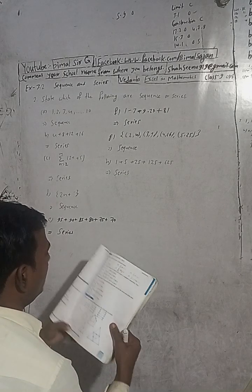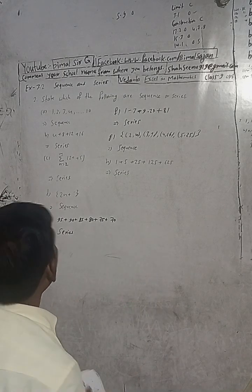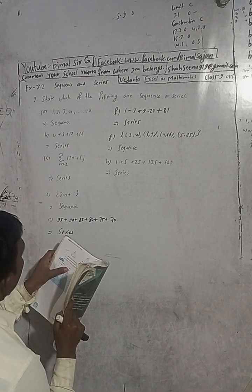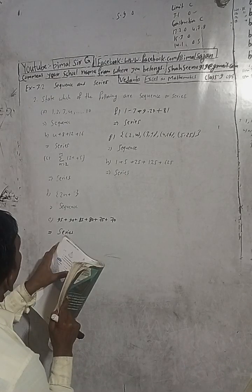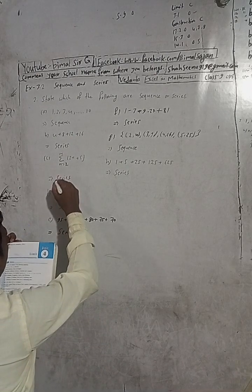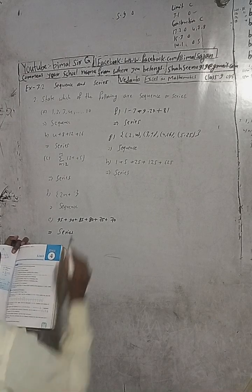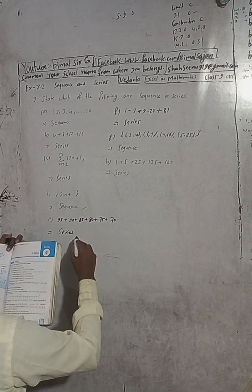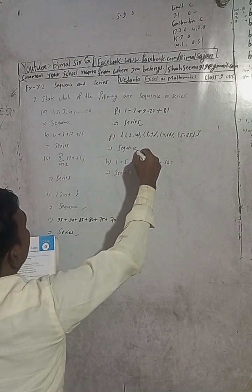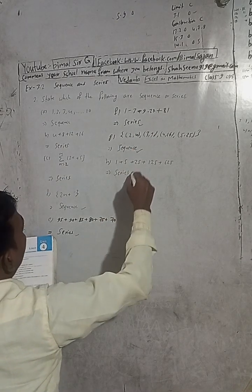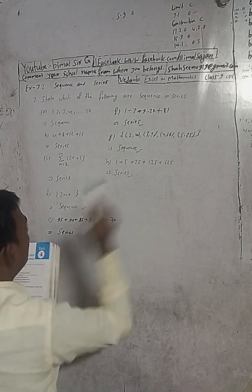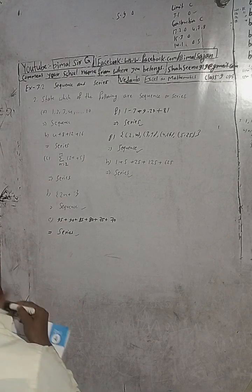So the solution and answers: number (a) is a sequence, (b) is a series, (c) is a series, (d) is a sequence, (e) is a series, (f) is a series, (g) is a sequence, and (h) is a series.